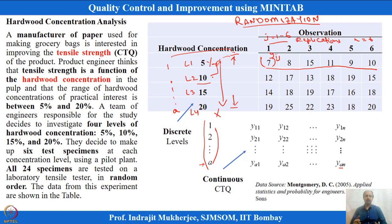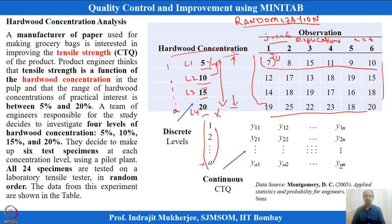In this example, we want to maximize tensile strength. Randomization was implemented and 6 replicates were taken, giving 24 observations across 4 levels — 5, 10, 15, and 20 percent hardwood concentration. We analyze this data to determine which hardwood concentration level significantly changes the mean response.